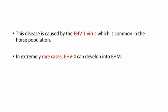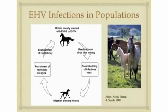The second condition is equine herpesvirus myeloencephalopathy. This disease is caused by equine herpesvirus 1, which is common in horse populations. In extremely rare cases, equine herpesvirus 4 can also develop into equine herpesvirus myeloencephalopathy. Horses latently infected with equine herpesvirus 1 or 4 can have reactivation of the virus from latency leading to nasal shedding of infectious virus, which leads to infection of young horses.